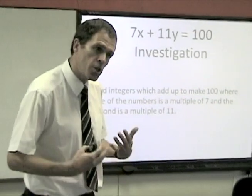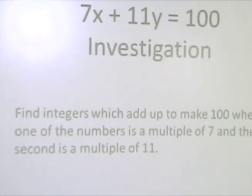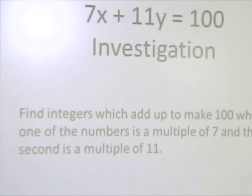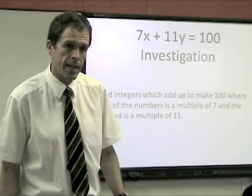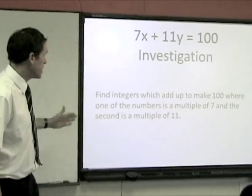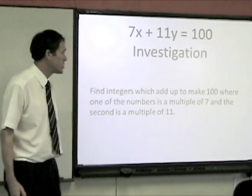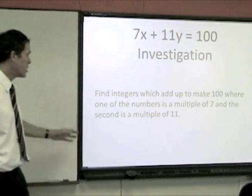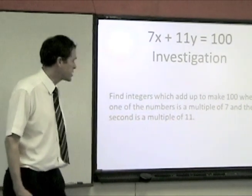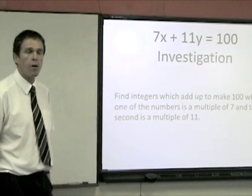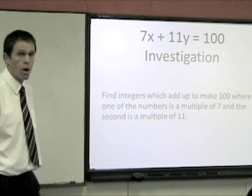Well I'm not going to continue because you are now going to do a very similar investigation. Except you're going to be using a different formula. You're looking for where 7x plus 11y is equal to 100. And your aim, just like mine was, is to find integers which add up to make 100. Where the first number is a multiple of 7. And now this time the second number is a multiple of 11. And you've got to try and find those x and y values.